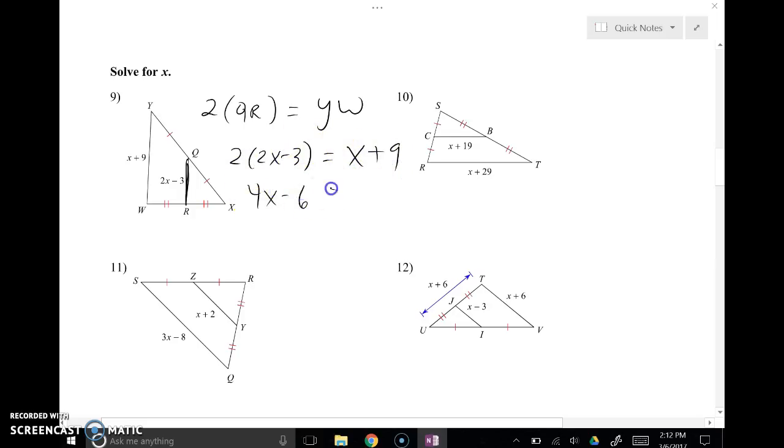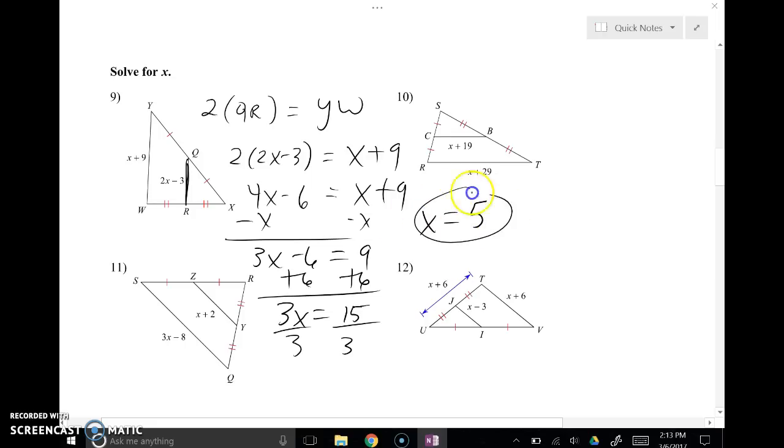So 4X minus 6 is X plus 9. Subtract X from both sides. 3X minus 6 is 9. Add 6 to both sides. 3X is equal to 15. Divide everything by 3. And X is equal to 5. So that's my answer. If they wanted me to find the length of QR or YW, I would just substitute for X. But they would have to indicate that here. All they said was solve for X. So I get to be done.